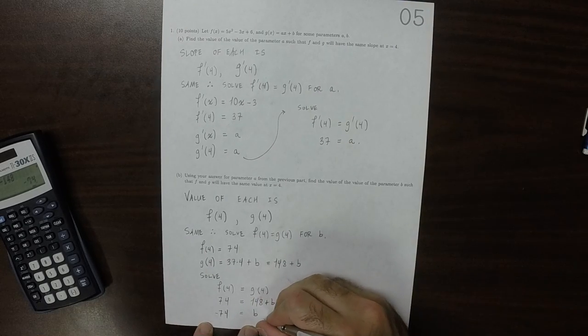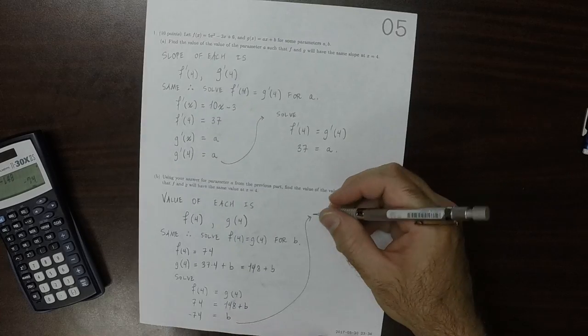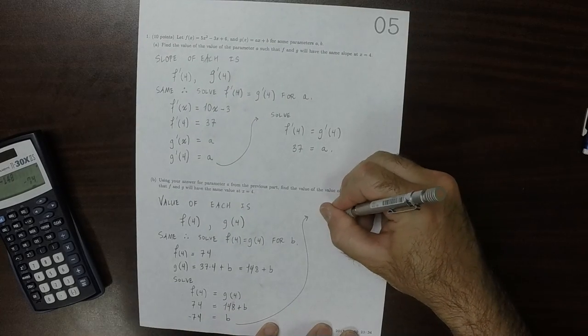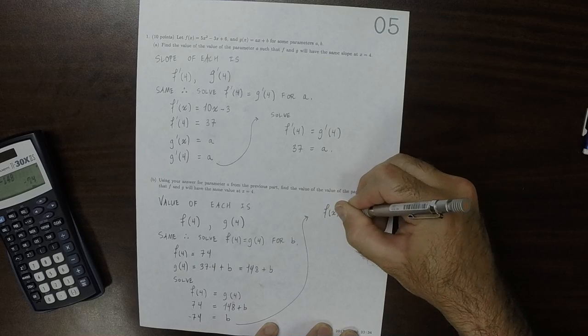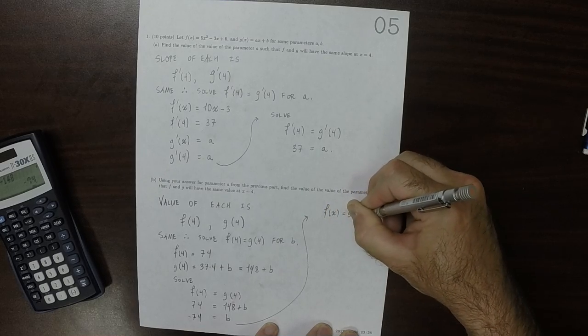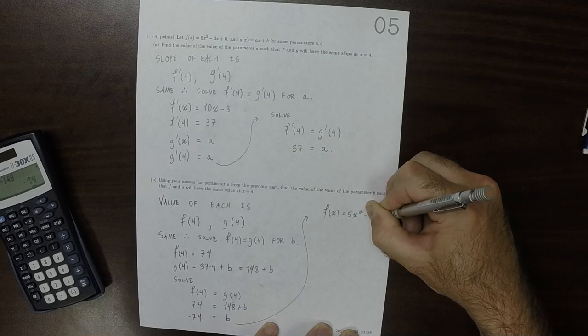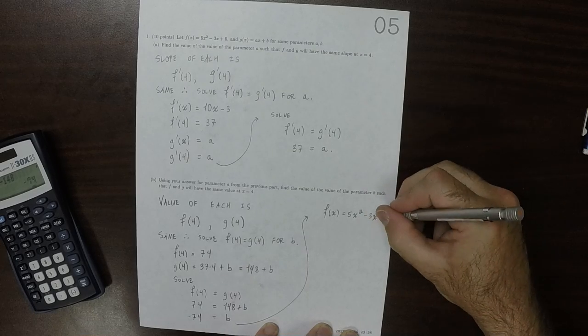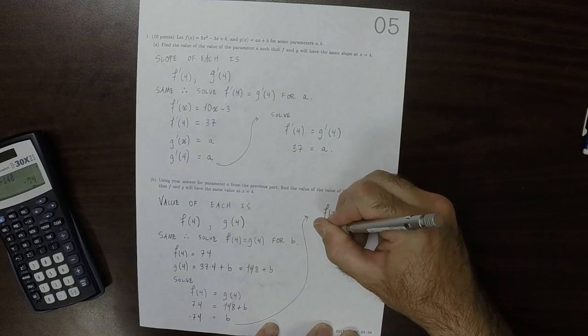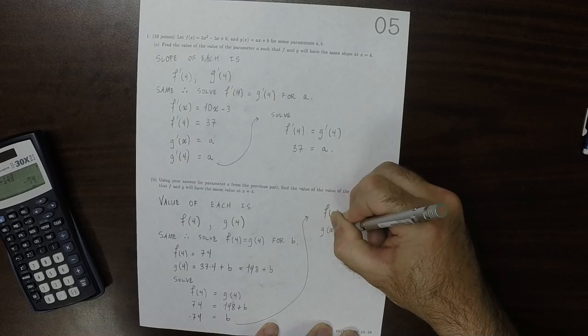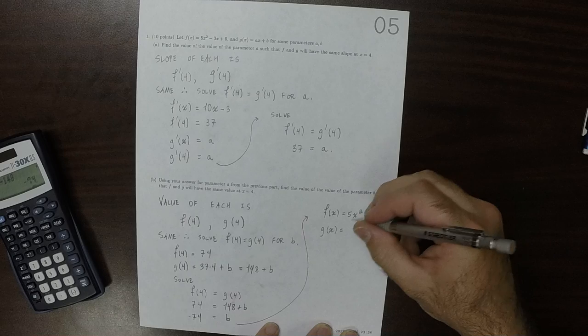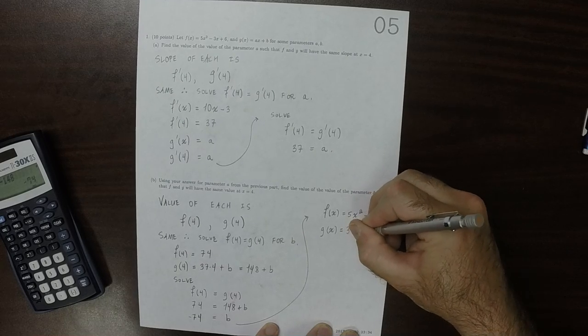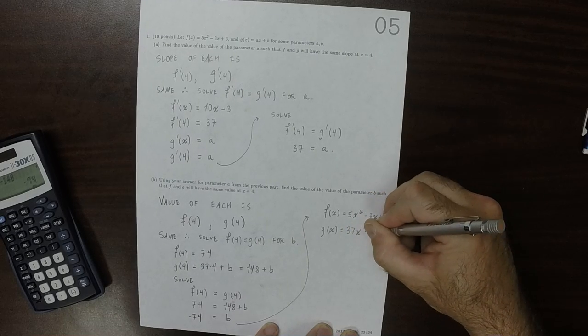And therefore, we have these two functions. f of x is 5x squared minus 3x plus 6. And now we have this other function. g of x is 37x minus 74.